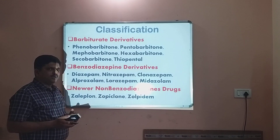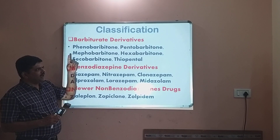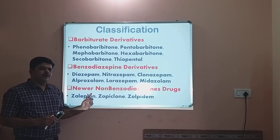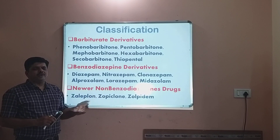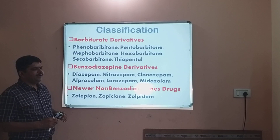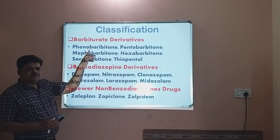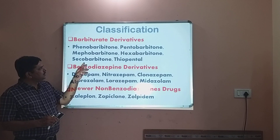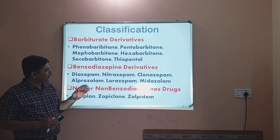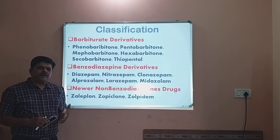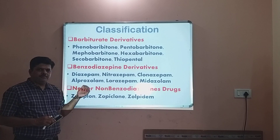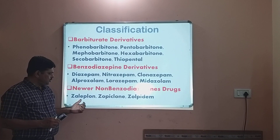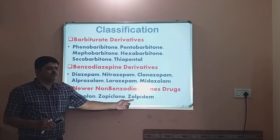The classification of hypnotic sedatives: first category is barbiturate derivatives; second category is benzodiazepine derivatives; third category is newer drugs — non-benzodiazepine derivatives. Barbiturate derivatives include phenobarbitone, pentobarbitone, mephobarbitone, hexobarbitone, secobarbitone, and thiopental. Benzodiazepines include diazepam, nitrazepam, clonazepam, alprazolam, lorazepam, and midazolam. The newer class includes zopiclone, zaleplon, and zolpidem.